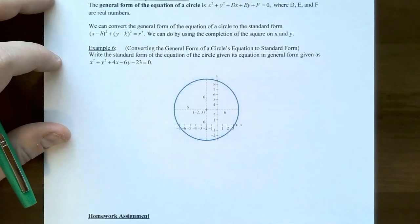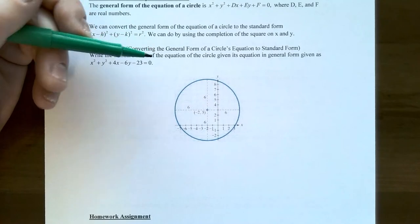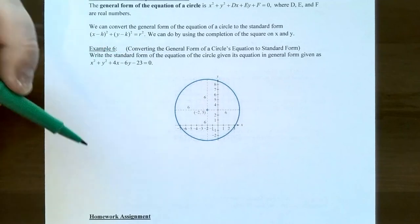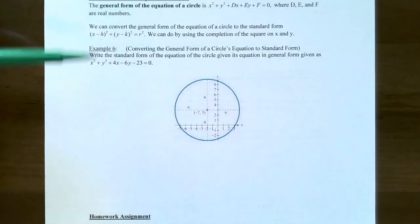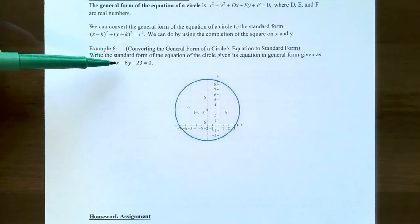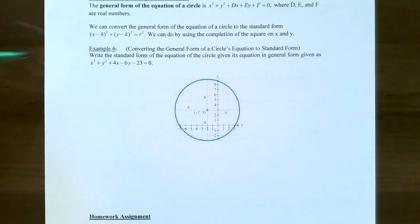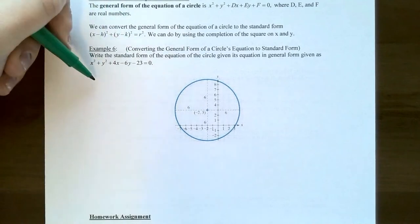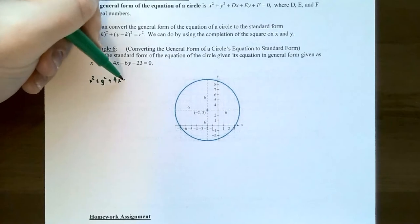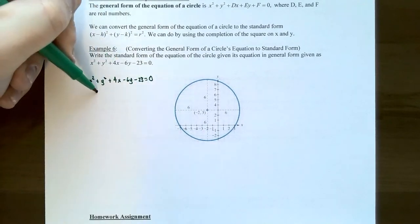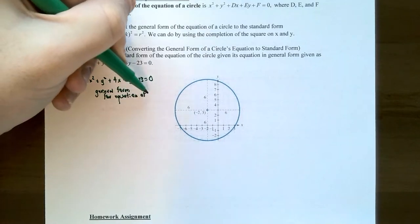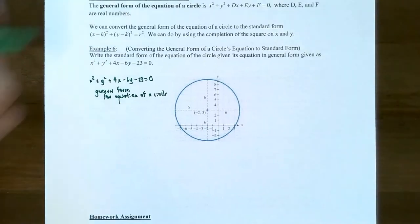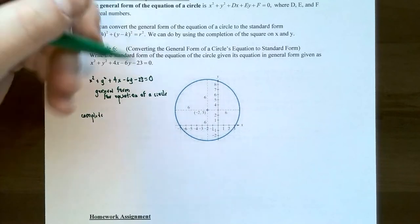Example 6: Convert the general form of a circle's equation to standard form. We want standard form to graph the circle or identify the center and radius. The equation in general form is x² + y² + 4x − 6y − 23 = 0. We can't identify the radius or center directly from this form, so we need to complete the square.